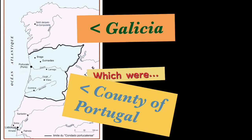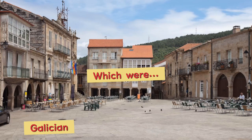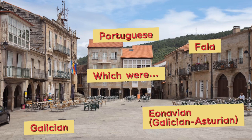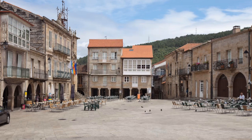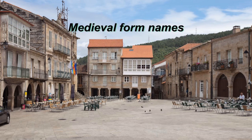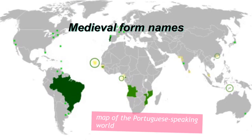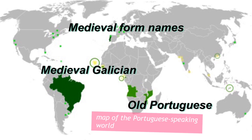Some of these were Galician, Portuguese, Fala, and Eonavian, or Galician-Asturian. When speaking of the two modern languages in their archaic forms, they're generally referred to as Old Portuguese and Medieval Galician.